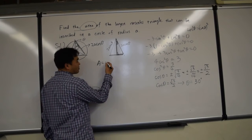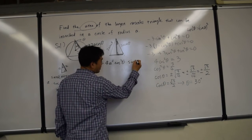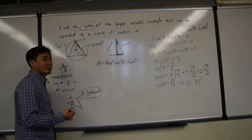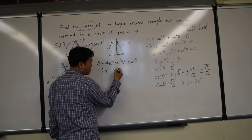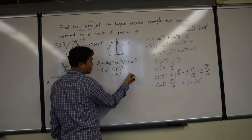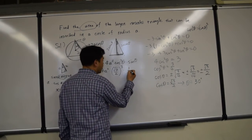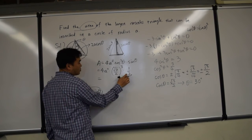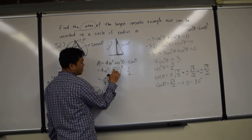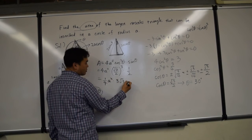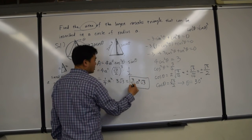The area function is 4A squared cosine cubed theta times sine theta. At theta equals 30 degrees: cosine 30 is root 3 over 2, cubed; sine 30 is one-half. So the area is 4A squared times (root 3 over 2) cubed times one-half. Simplifying: 4 over 16 is one-fourth, and root 3 cubed is 3 root 3, giving area equals (3 root 3 over 4) A squared.